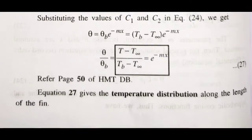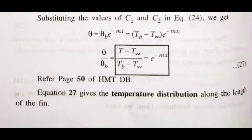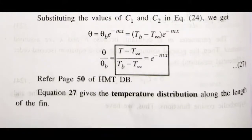Applying the boundary conditions to c₁·e^(mx) + c₂·e^(−mx), the solution for case 1 is: θ/θ_b = (T − T∞)/(T_b − T∞) = e^(−mx).